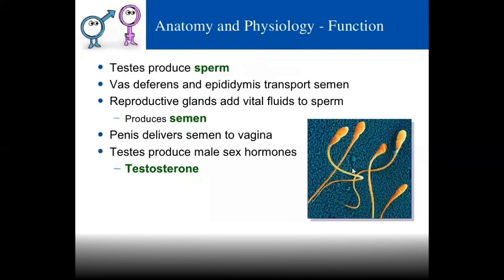Anatomy and physiology: testes are the gonads. They produce sperms and hormones. Sperms are produced in the testes and then move to the epididymis via the vas deferens.